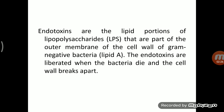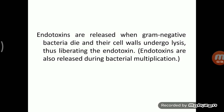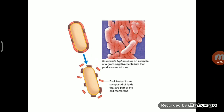Endotoxin is the lipid portion of lipopolysaccharide (LPS). Gram-negative bacteria have lipopolysaccharide with two components: lipid and polysaccharide (carbohydrate). The lipid A portion present in gram-negative bacteria is the endotoxic component — it shows endotoxic properties. When the bacteria die or the cell wall breaks down, this lipid A portion exhibits toxicity. The diagram example given is Salmonella typhimurium, which produces endotoxin.